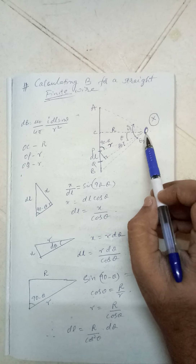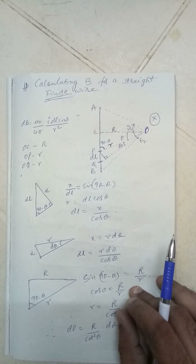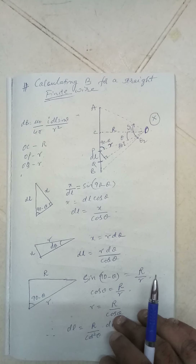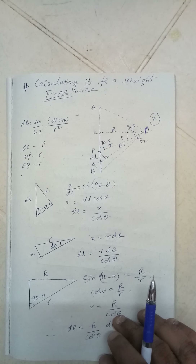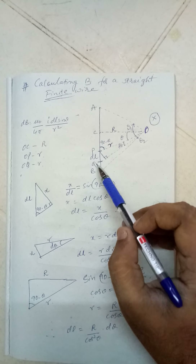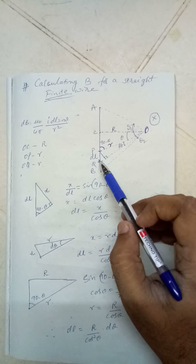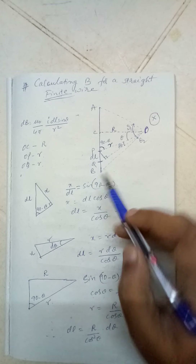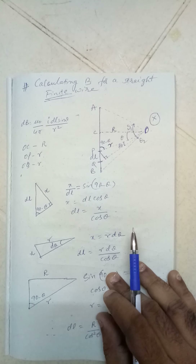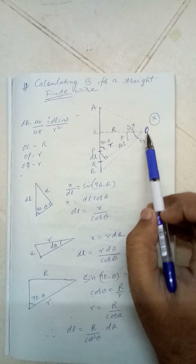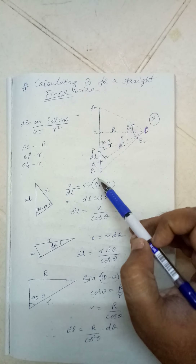This point O is situated at a normal distance from the wire — that means this capital R is a known value. To proceed, if I take a small element dl and find out its magnetic field, then integrate it over the entire length, I will get the total magnetic field. The answer is yes.